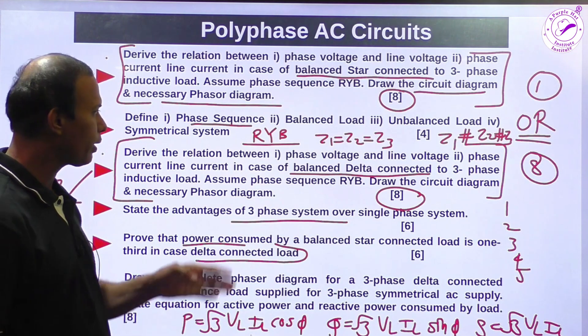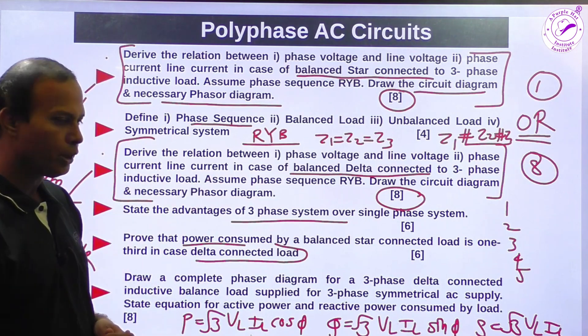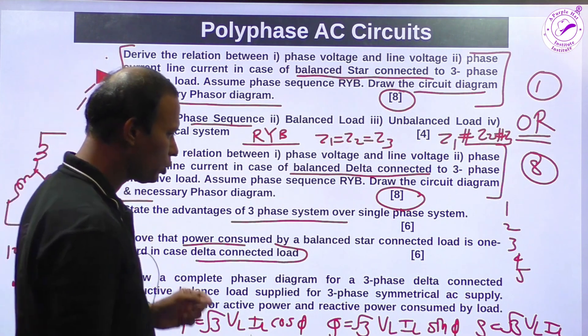Star connected network or delta connected network, three-phase network. Finding power, finding line voltage, line current, phase voltage, phase current - such kinds of problems will be easily possible. Active power, reactive power, so read the problems on this topic also.